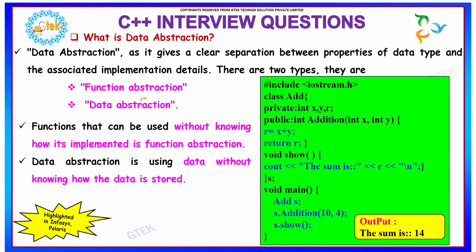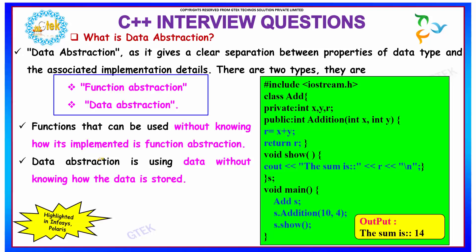There are two types: function abstraction and data abstraction. Functions that can be used without knowing how they are implemented is known as function abstraction. The user need not know how the function is implemented — he just has to know what has to be passed to the function in order to get the output.